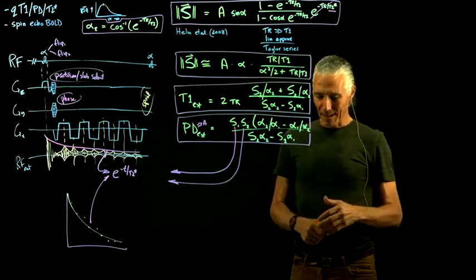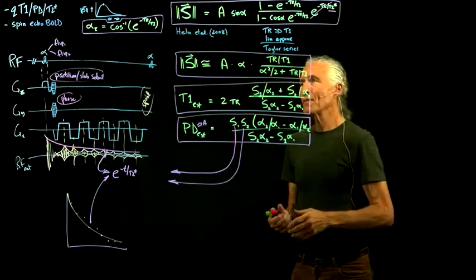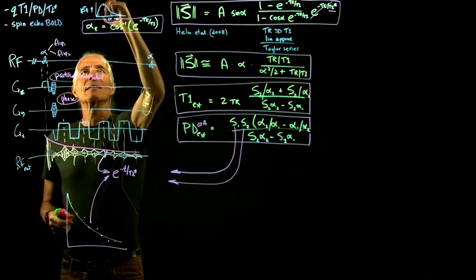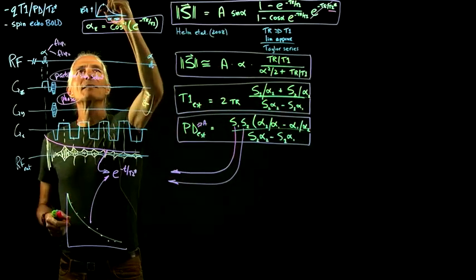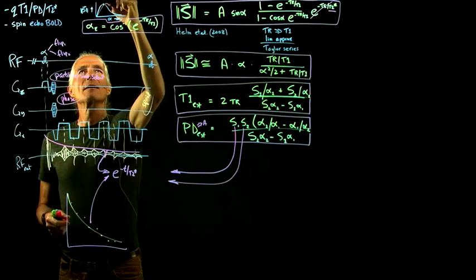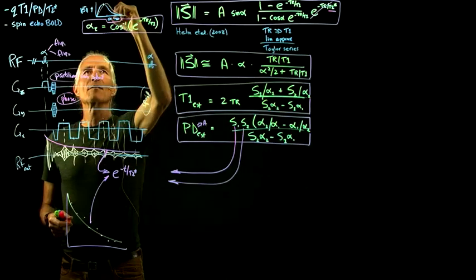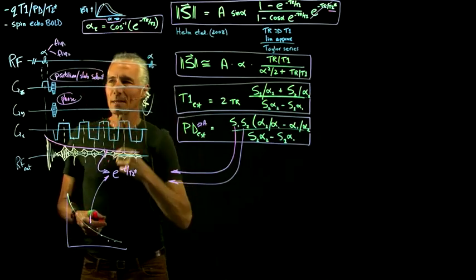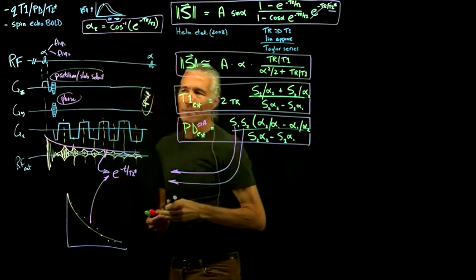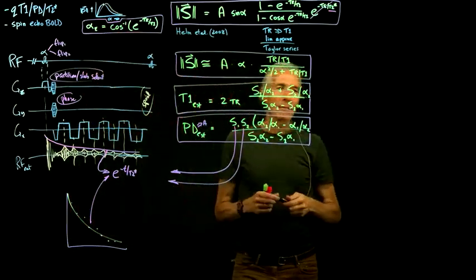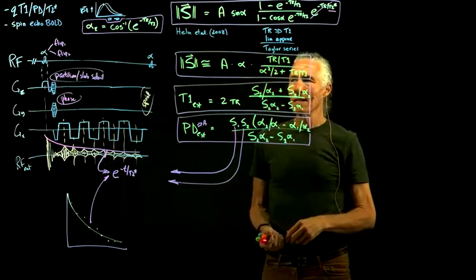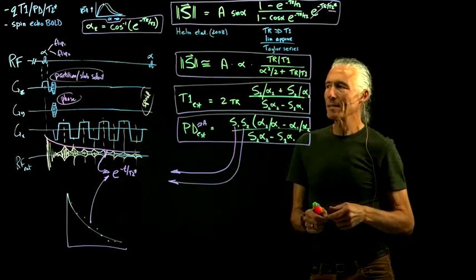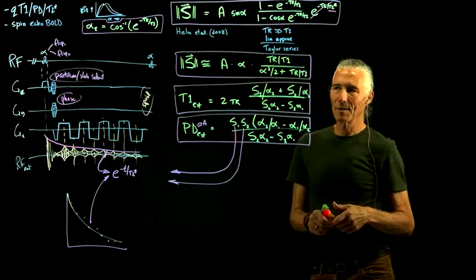At 3T the hot spots are only about 25–30% hotter than surroundings — the wavelength isn't as short as a microwave — but that's enough to flip the gray/white matter contrast. Gray and white matter T1 curves are similar, so being off by 30% can actually reverse the contrast. We need to estimate the actual flip angle.